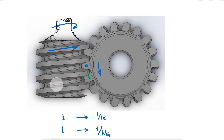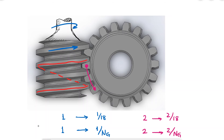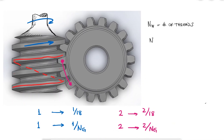If the worm is double-threaded, like a double-threaded screw, each rotation advances each gear tooth to the position two teeth away. For this reason, we don't care about the number of teeth on the worm — we care about the number of threads — but we still refer to them as capital N_W, and the relationship between the number of threads and rotation speed still holds.